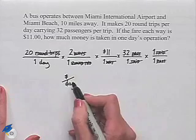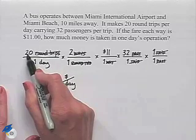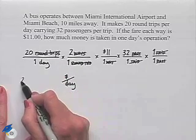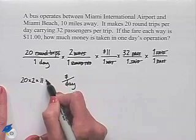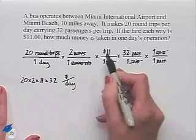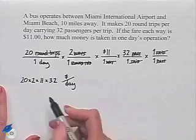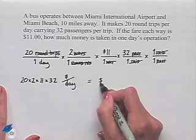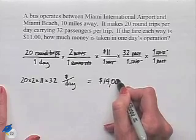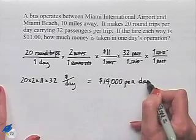To determine this, we're going to take our numerator and multiply. We're going to have 20 times 2 times 11 times 32 times 1, and then 1 times 1 times 1 times 1 times 1. So when we evaluate this, we come up with $14,000 per day.